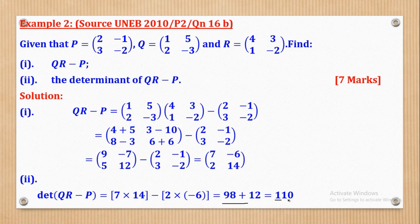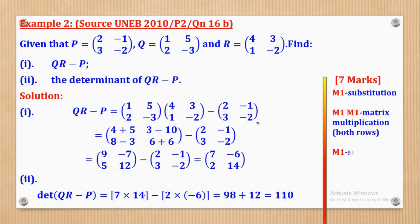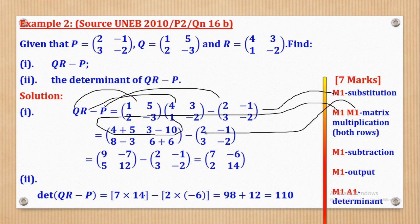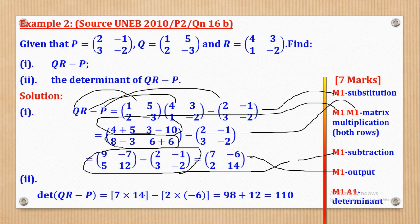7 times 14 gives 98, and 2 times negative 6 gives negative 12. The minus sign and the negative cancel to give a positive, so we add: 98 plus 12 gives 110. So the Determinant of 2R minus P is 110. Marks awarded: M1 for substituting all matrices correctly, M1 each for first and second row of multiplication, M1 for subtraction, A1 for the matrix output, M1 for substitution in the determinant formula, and A1 for the final answer.